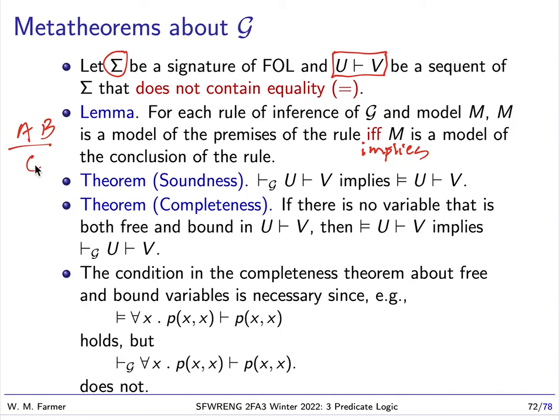And it doesn't go the other way. So truth flows in only one direction. So usually if C is valid in a model, that does not mean necessarily that both A and B are valid.